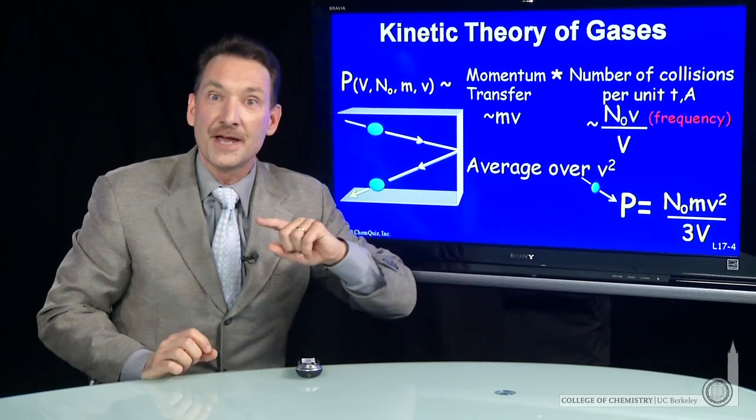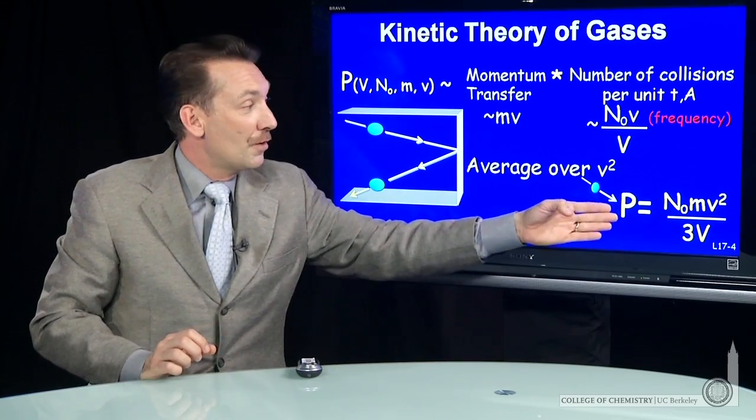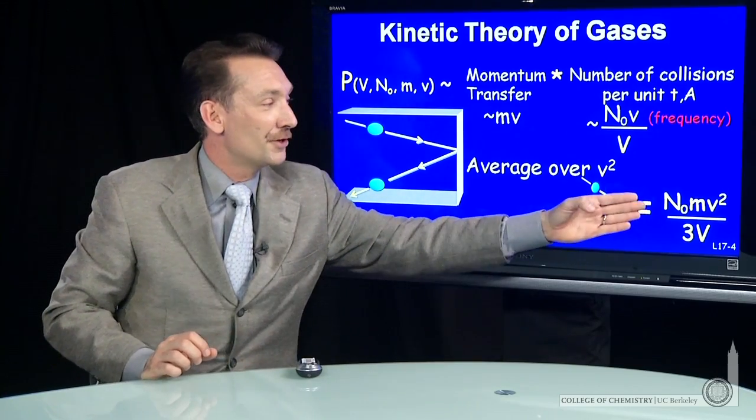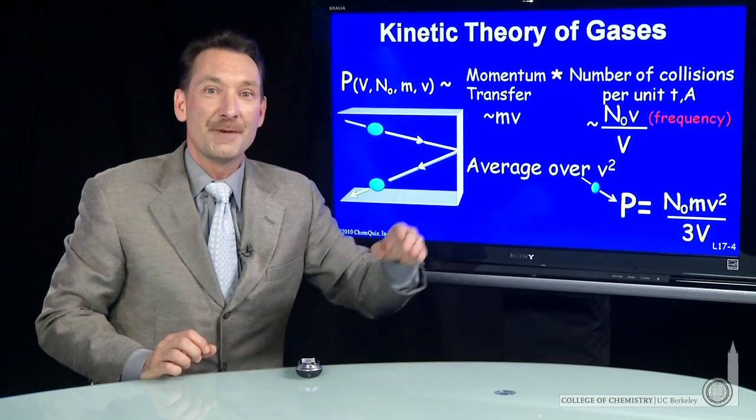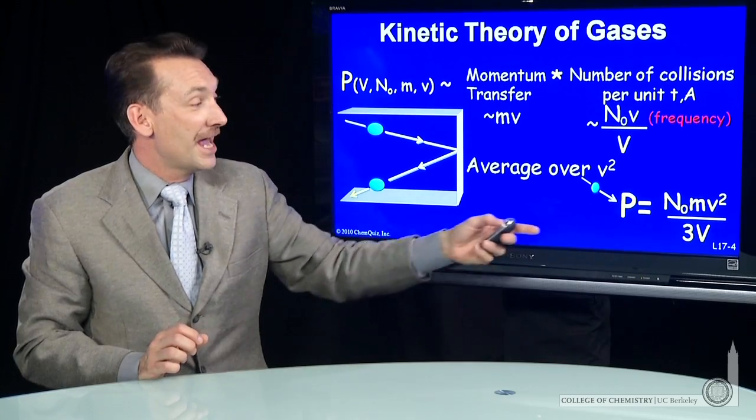So we overcount a little bit, so that compensates for this. So we have a pressure in terms of the number of particles, their masses, their velocity squared, and the volume.